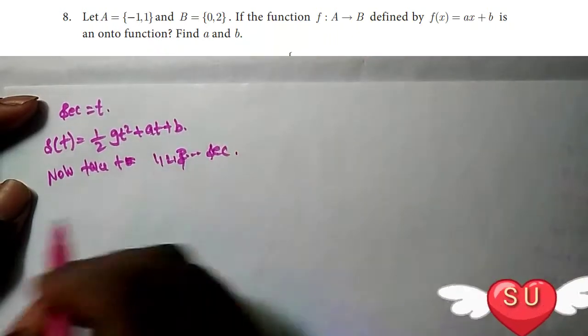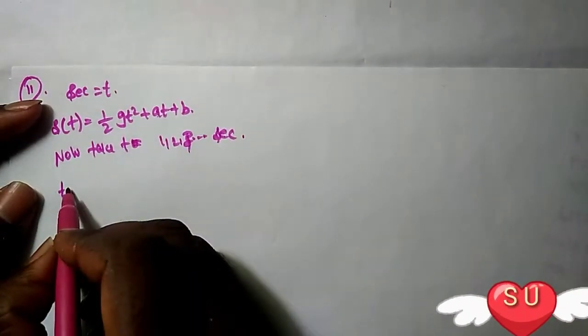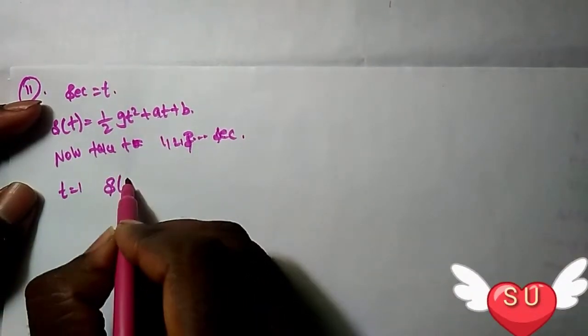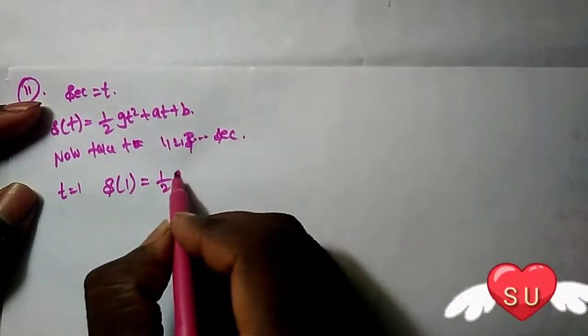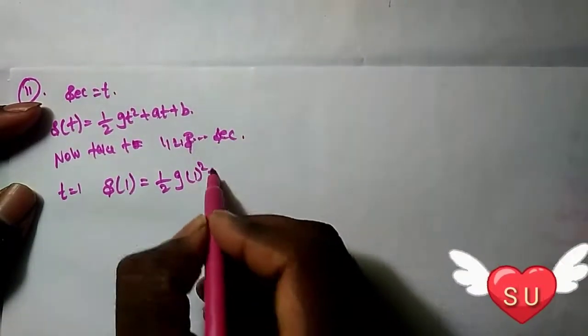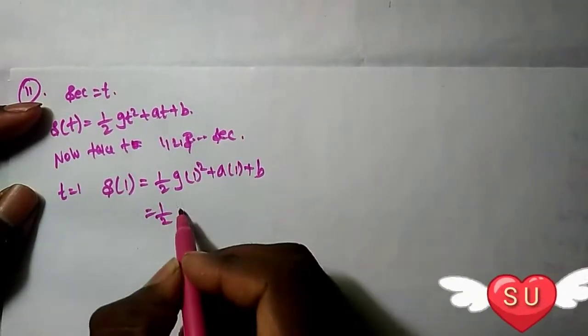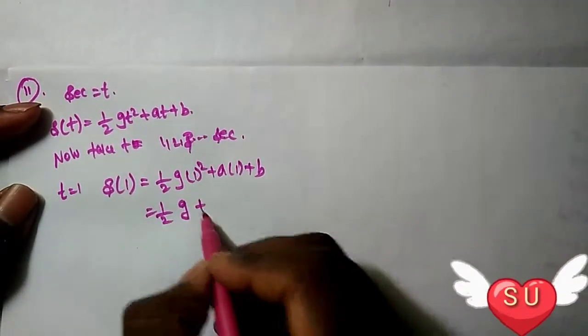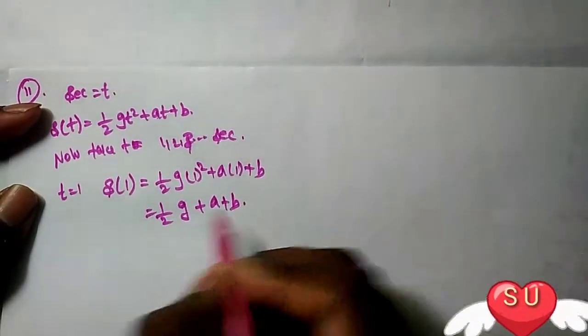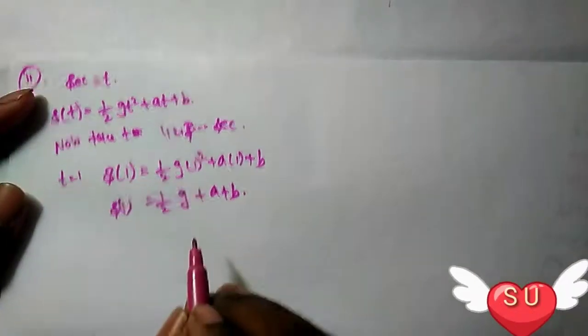When T = 1, S(1) = 1/2 g × 1² + a × 1 + b, which equals 1/2 g + a + b.